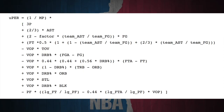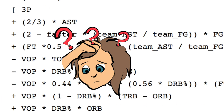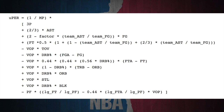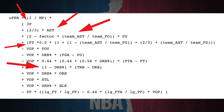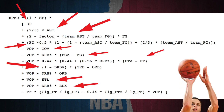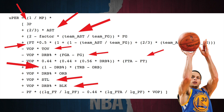Here's the entire formula for how a PER is calculated. It's pretty complicated. But to simplify it, it takes into account all the basic statistical categories we're familiar with: points, assists, rebounds, free throws, 3-pointers, field goal percentage, free throw percentage, turnovers, steals, and blocks. It takes all of that and compares each to the league's average and produces a single number that attempts to quantify just how good a player is that season.